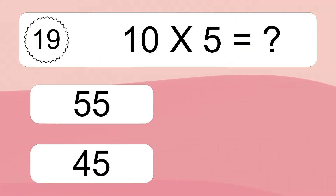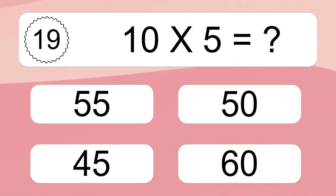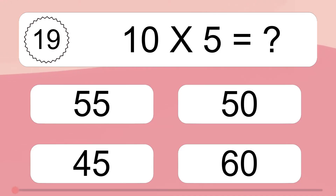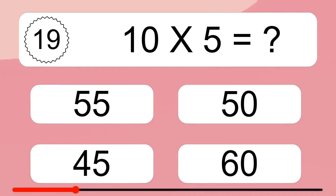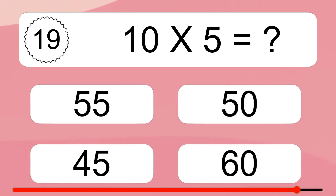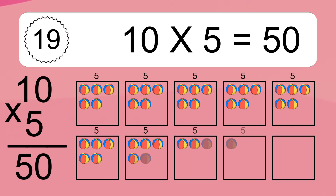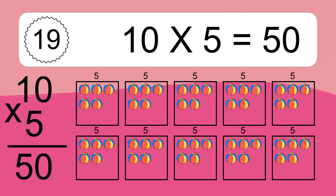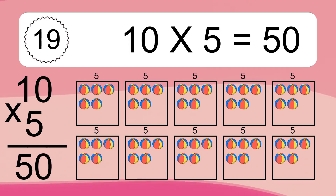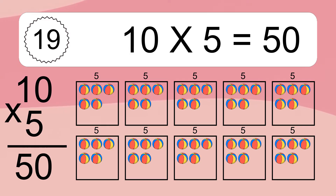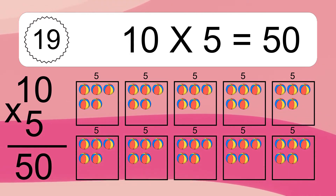10 times 5 equals what? 10 times 5 equals 50. We have 10 boxes, and each box has 5 colorful balls inside. If you count all the balls in all the boxes together, you will have 10 times 5 balls. This equals 50 balls.